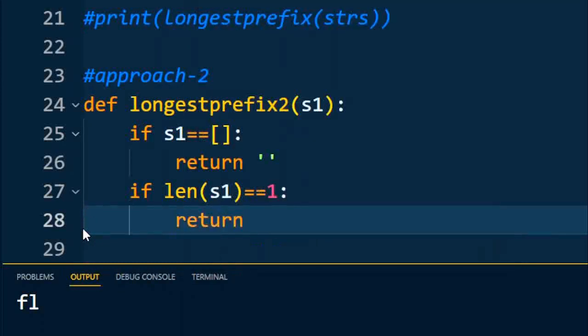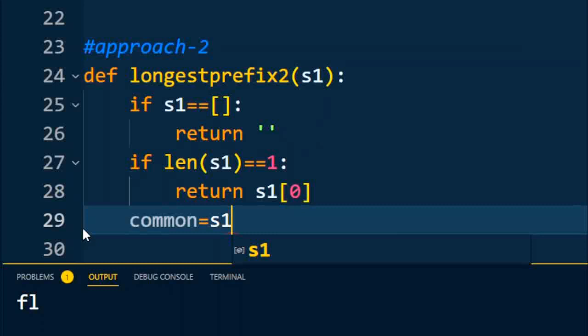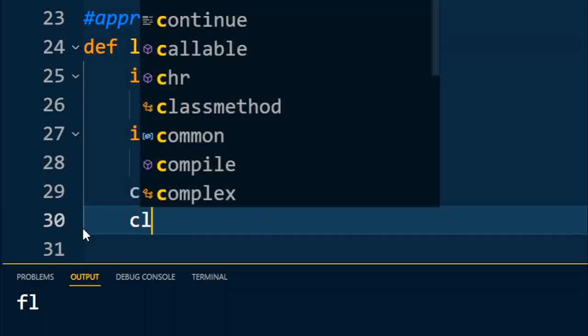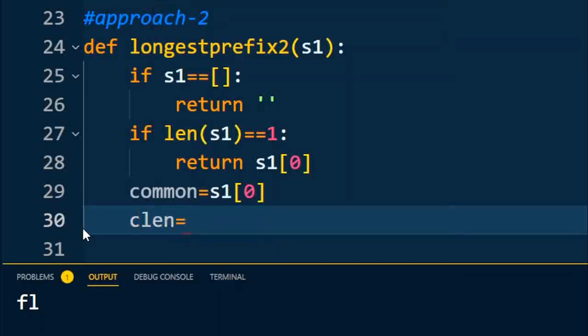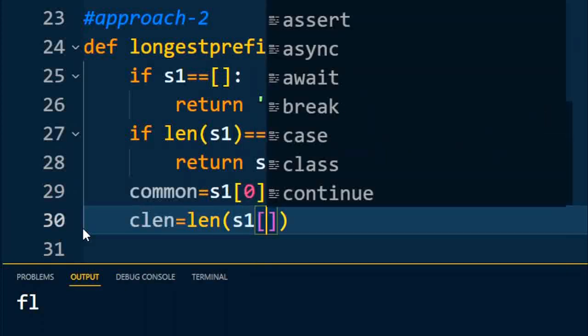If the length of the string is equal to 1, then it will return s1[0], that is the first character. After that, we will take some variable common which will hold the first string element.